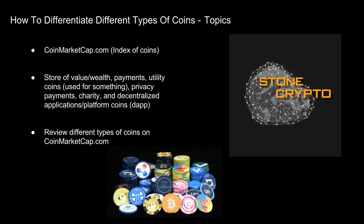Today's topics are: what is CoinMarketCap.com and how to navigate it; the different categories of coins and their use cases, such as store of value, payment coins, utility coins, privacy coins, charity-focused coins, specialty coins, and decentralized application or platform coins. Lastly, I'll review CoinMarketCap.com briefly to show you how I use it.